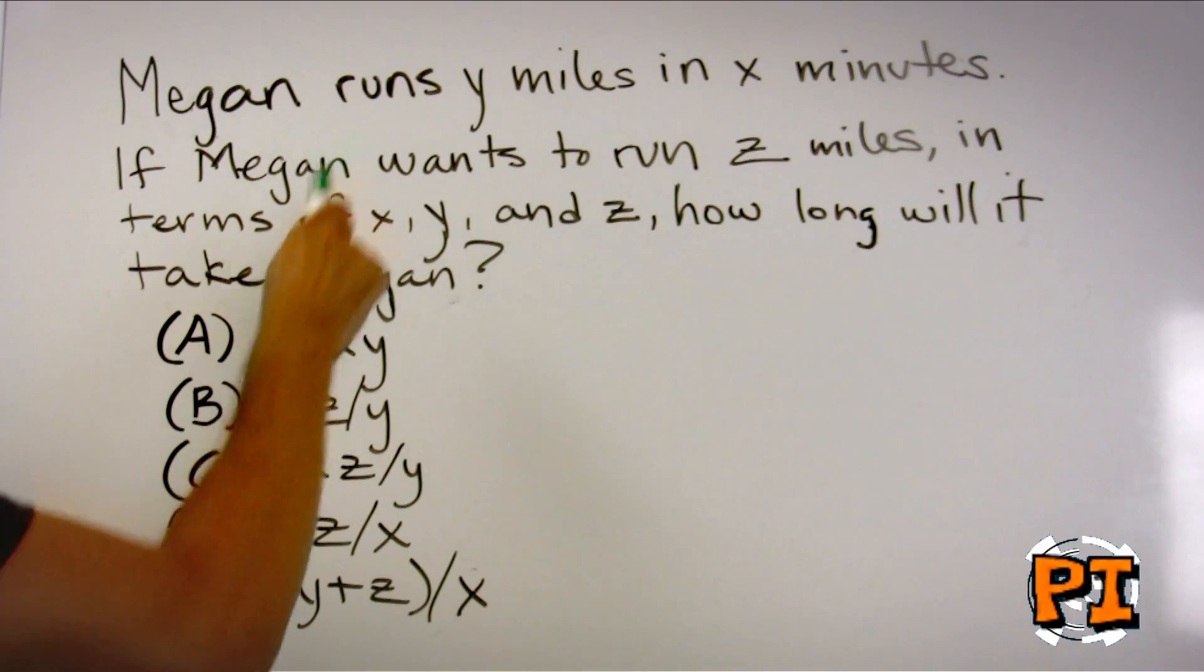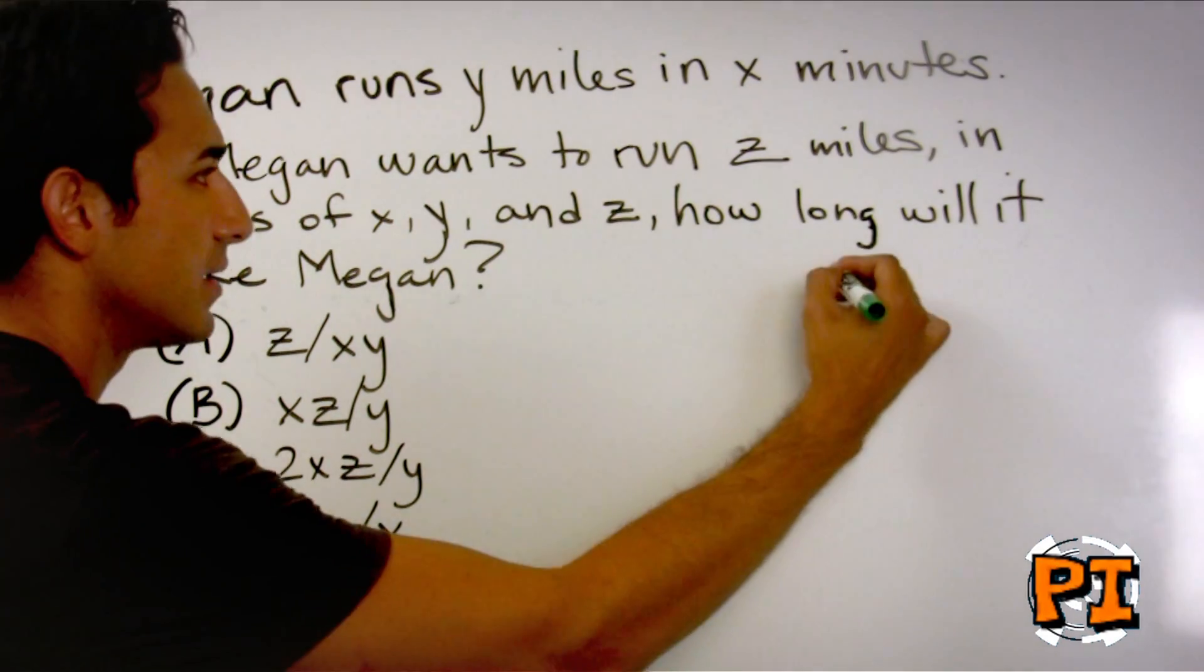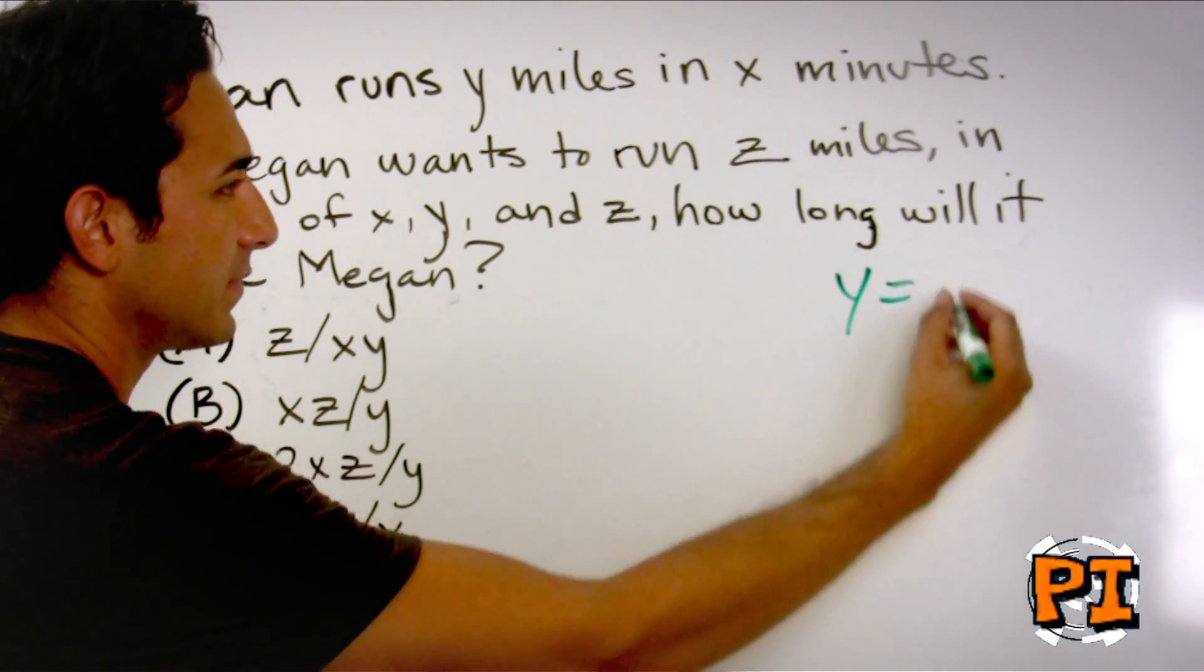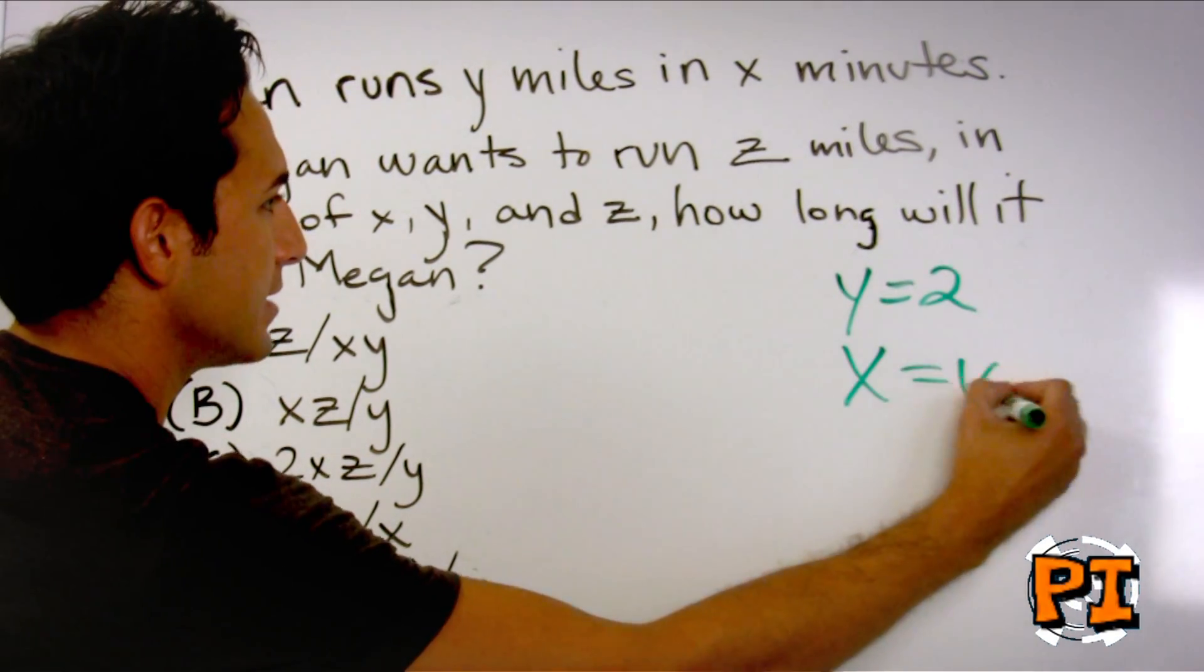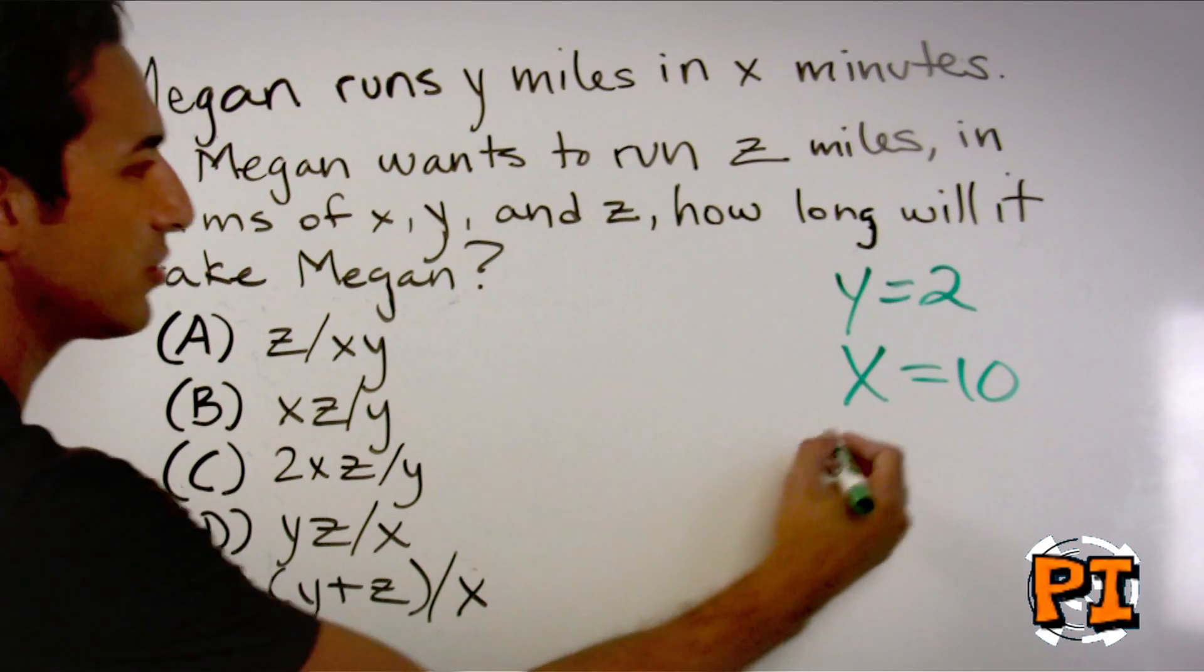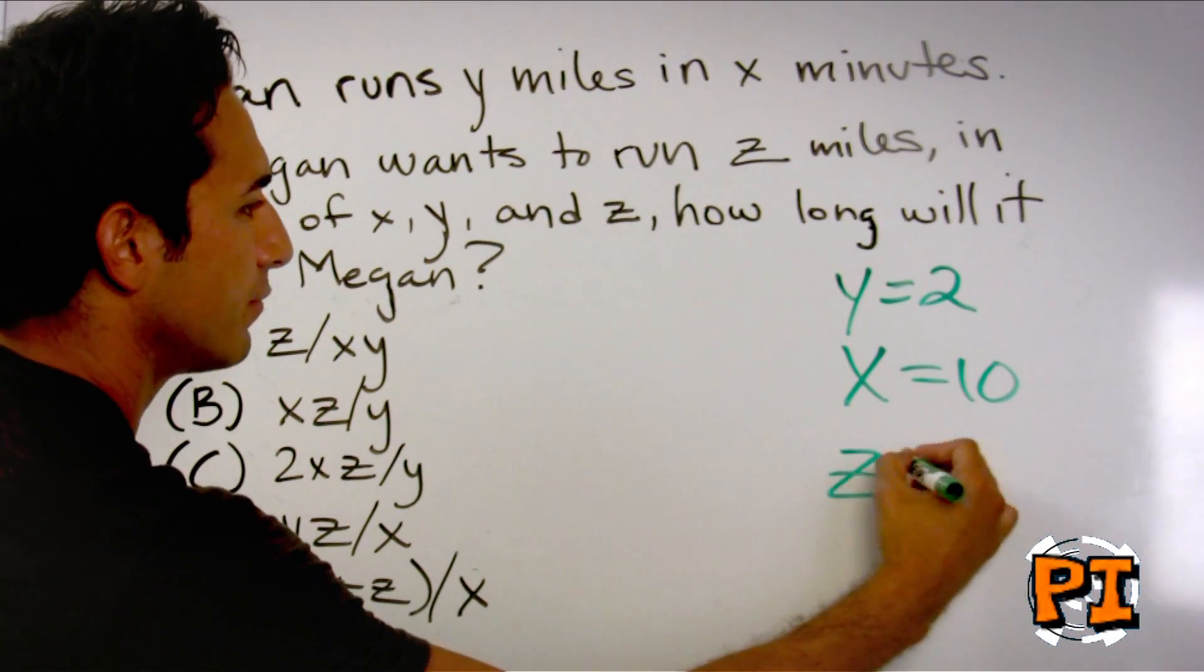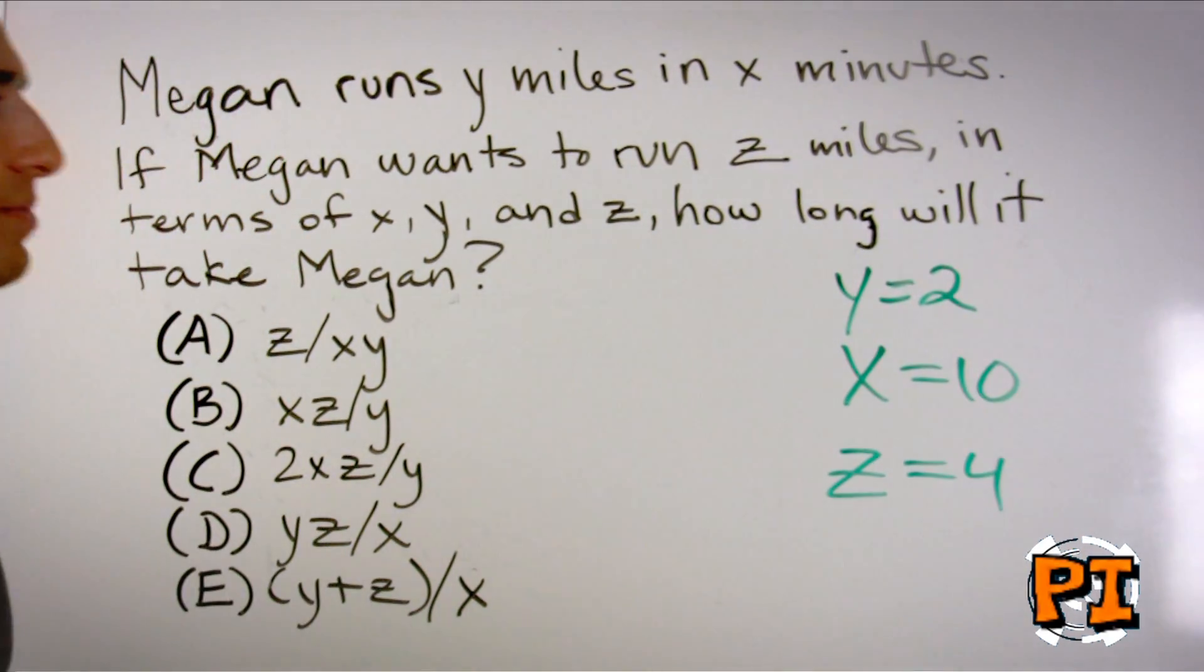For example, Megan runs y miles in x minutes. Let's come up with a number for y. Let's say 2. Megan runs 2 miles. Let's say she runs 2 miles in 10 minutes. Now she wants to run 4 miles. We just come up with numbers that are easy.